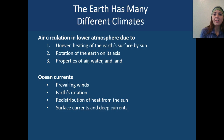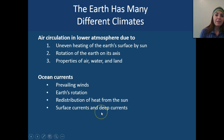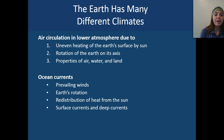The Earth has many different types of climates influenced by multiple factors. Air circulation in the lower atmosphere is due to the uneven heating of the Earth's surface by the sun, the rotation of Earth on its axis, and the properties of air, water, and land. We also have ocean currents, which are due to prevailing winds, Earth's rotation, the redistribution of heat from the sun, and both surface and deep currents.